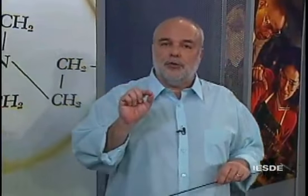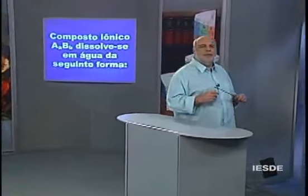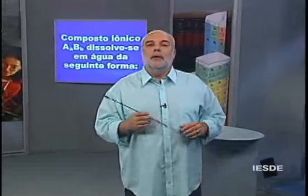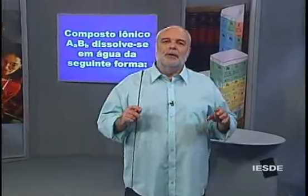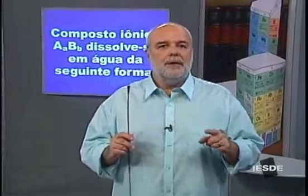Compostos que se dissolvem tão mal que a solução deles, saturada, é extremamente diluída — é disso que estamos falando ao tratar do produto de solubilidade. Para generalizar, considere um composto iônico AₐBᵦ, onde A é o cátion presente 'a' vezes e B é o ânion presente 'b' vezes. O cátion A terá carga b+, enquanto o ânion B terá carga a−. Teremos 'a' cátions de carga b+ e 'b' ânions de carga a−.